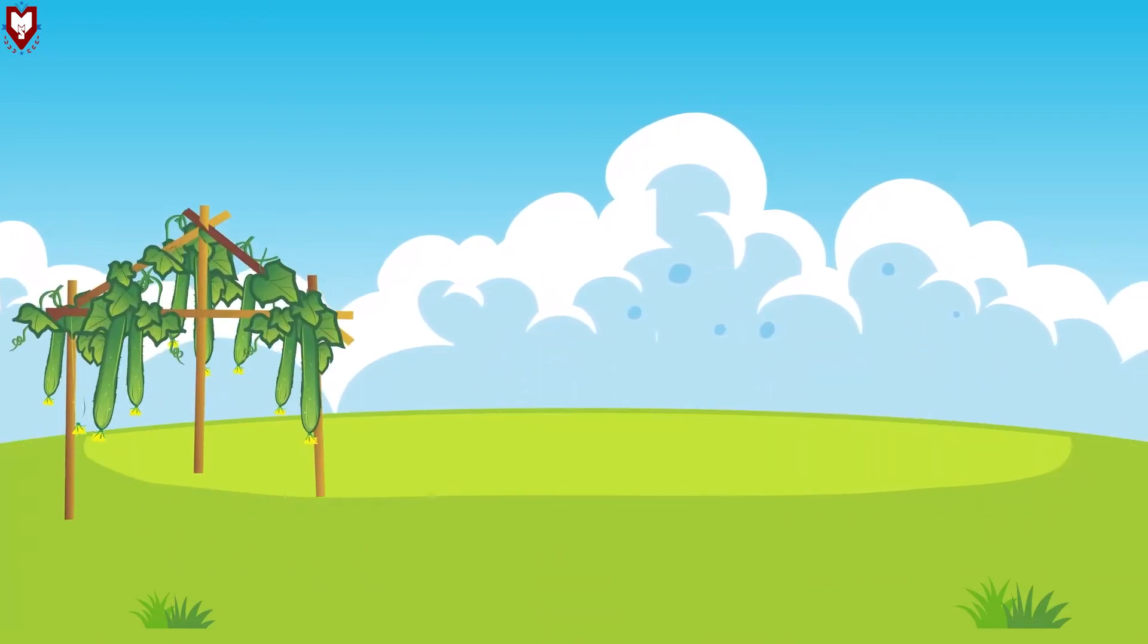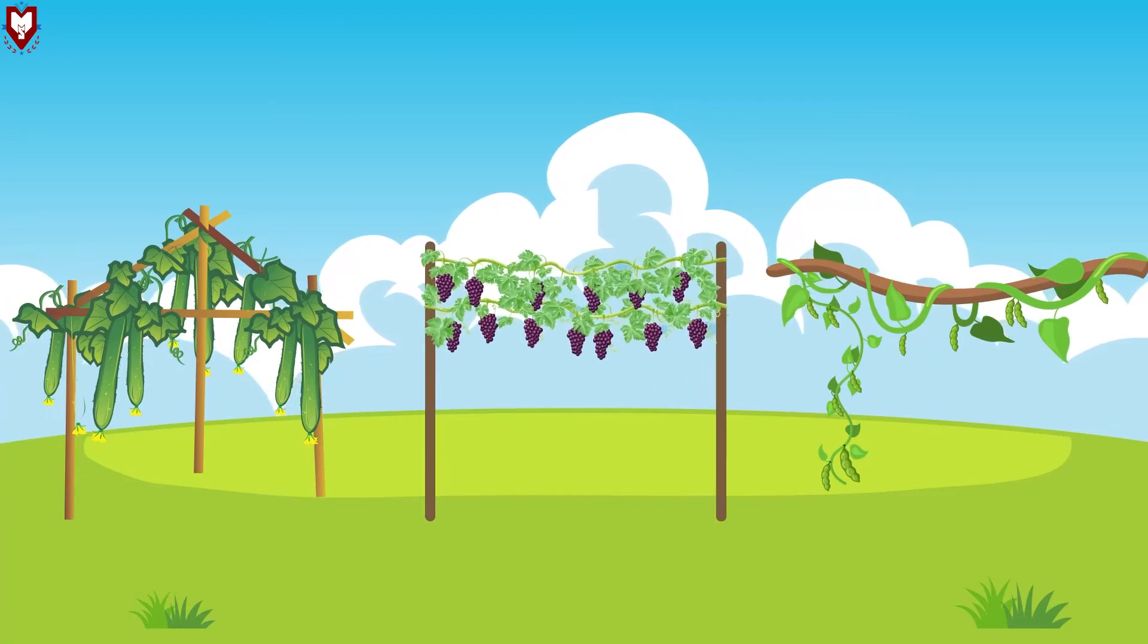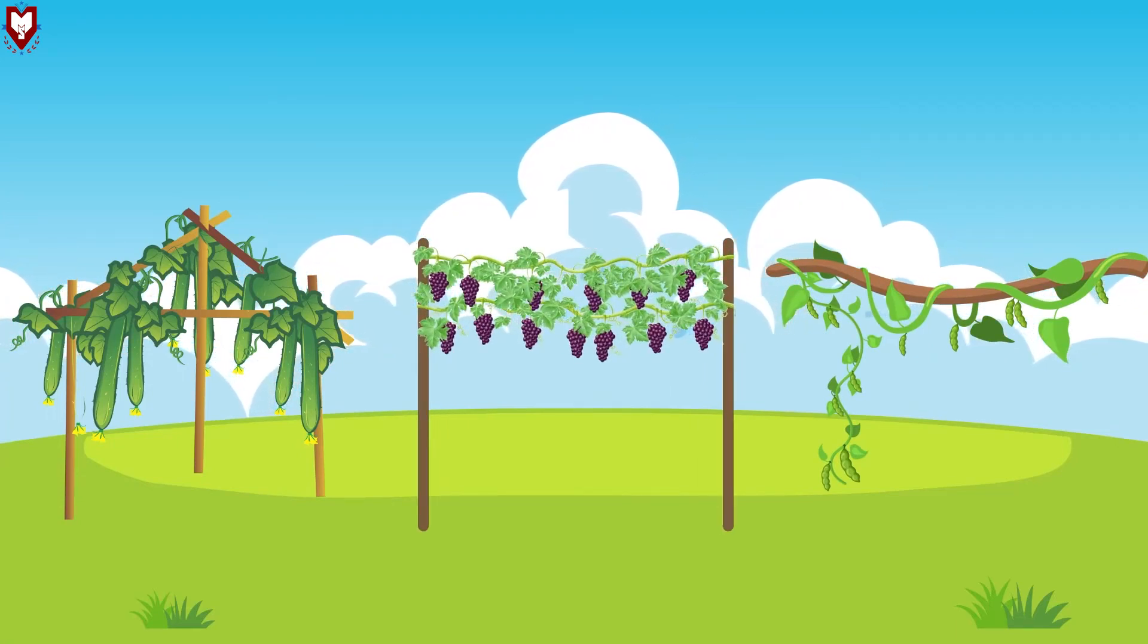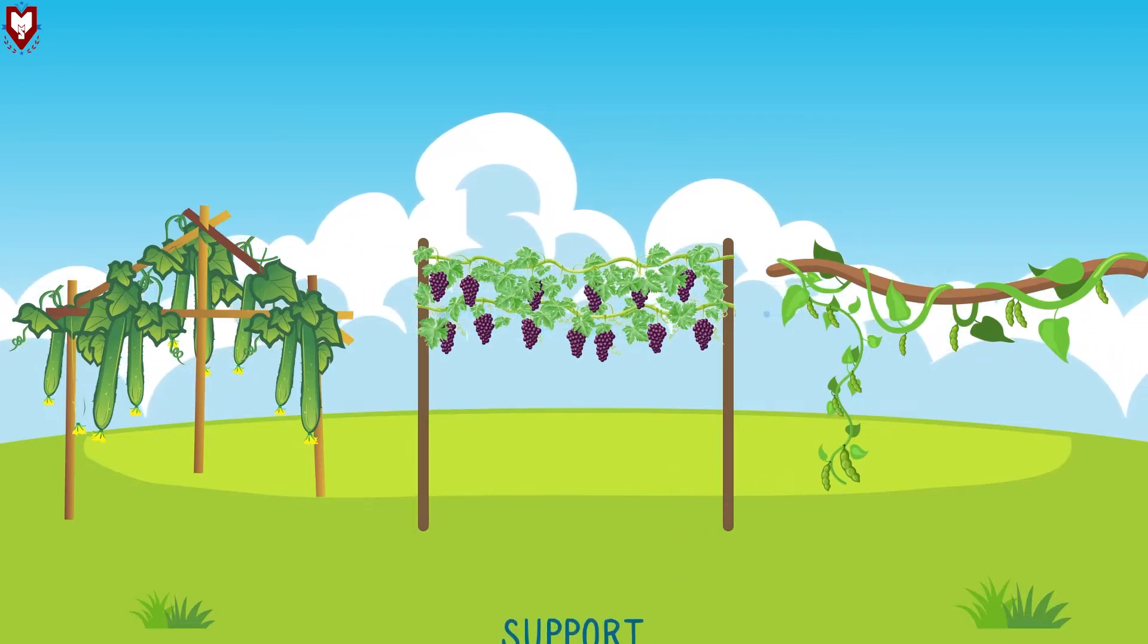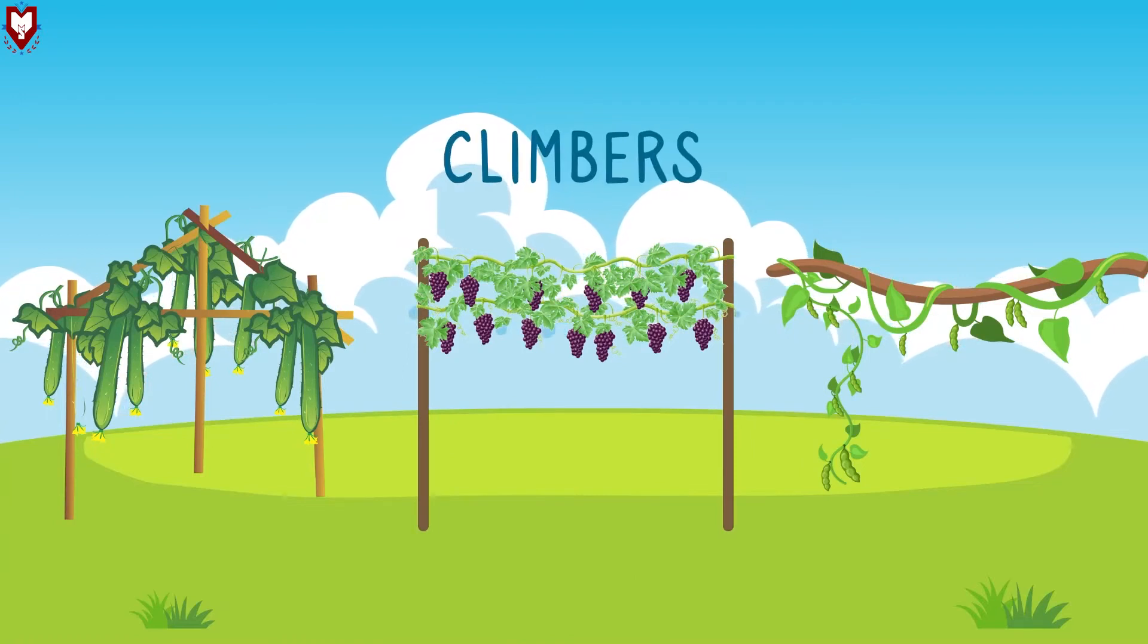Plants like cucumber, bean, grapes cannot stand straight on their own. They need support to climb. These are called climbers.